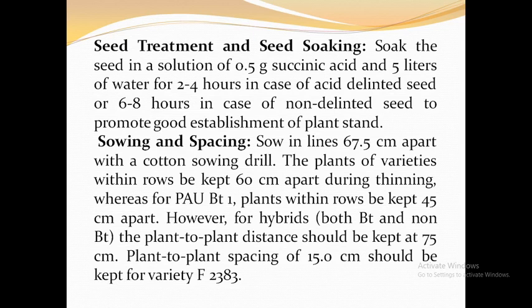For seed treatment and seed soaking, soak the seeds in a solution of 0.5 grams of salicylic acid in 5 liters of water for 2 to 4 hours in case of acid-delinted seeds, and 6 to 8 hours in case of non-delinted seeds. For acid delinting, mix 10 grams of commercial concentrated sulfuric acid with 1 kg of cotton seeds.